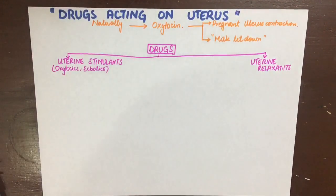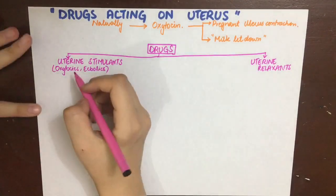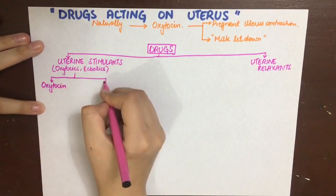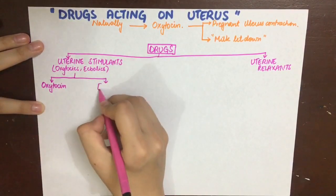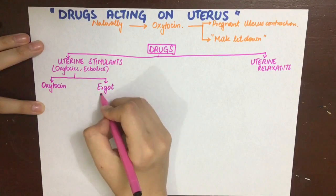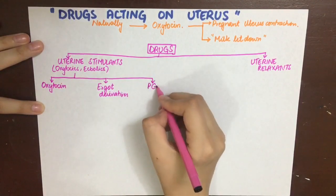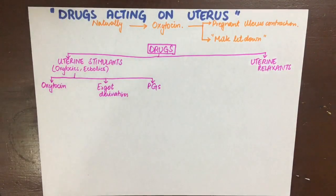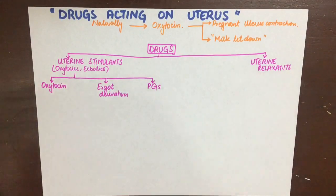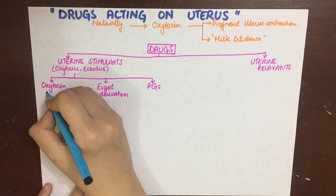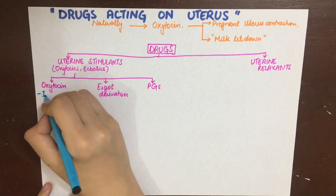Three main uterine stimulants we are going to discuss are natural oxytocin, ergot derivatives, and prostaglandins. Remember that oxytocin will only act on the fundus and the body of the uterus, not the cervix, so this helps in labor.